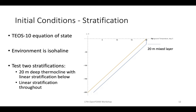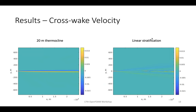We test two environments, both isohaline but with different temperature stratifications. The first has a 20-meter deep isothermal thermocline with a linear temperature stratification below; the second has a linear temperature stratification all the way to the ocean surface. Density is modeled using the TEOS-10 equation of state in both simulations. Cases were run for 3600 seconds (one hour), which via the Galilean transform corresponds to a wake approximately 25 kilometers long.